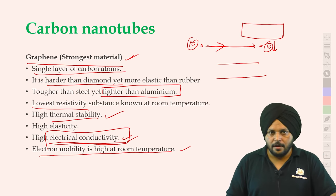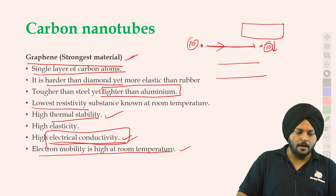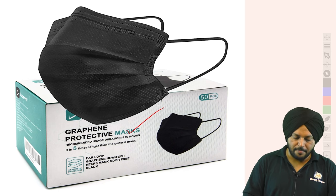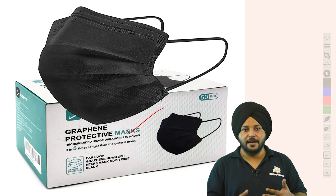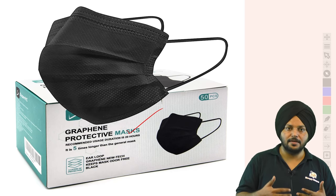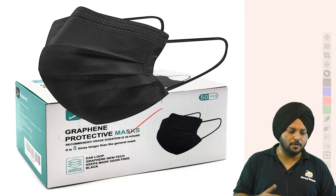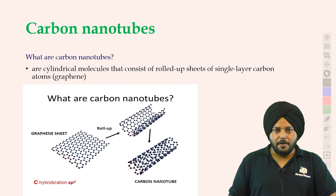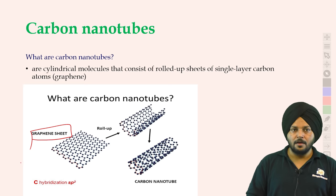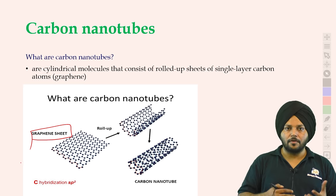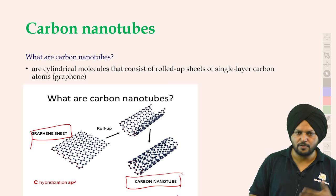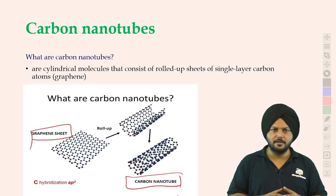Graphene की बात हो गई। अब graphene को — recently इससे पहले देख लो कि graphene mask भी बनाया गया। इसकी antimicrobial properties हैं, तो यह auto-clean है। COVID के time पर यह भी news में था। अब अगर graphene की thin sheet है, इसको roll किया और उसकी tube बना दी — उसको बोलते हैं carbon nanotube। Nano scale पर होती है, बहुत ही thin tube है।